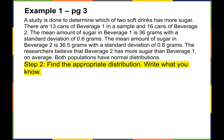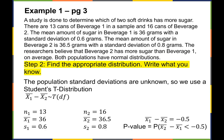Now we find the appropriate distribution and write down what we know. The population standard deviations are unknown, so just like with confidence intervals and single-mean hypothesis testing, we use the Student's t distribution. From the data: N1 = 13, N2 = 16, X1-bar = 36, S1 = 0.6, X2-bar = 36.5, and S2 = 0.8.